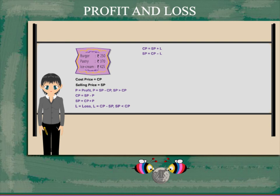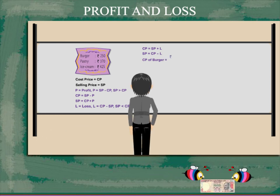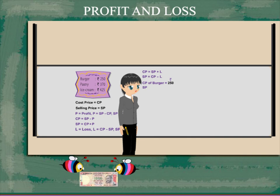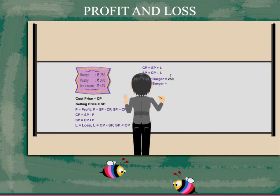Nancy ma'am now works out her profit and loss. CP of burger is rupees 250 and SP is rupees 300.